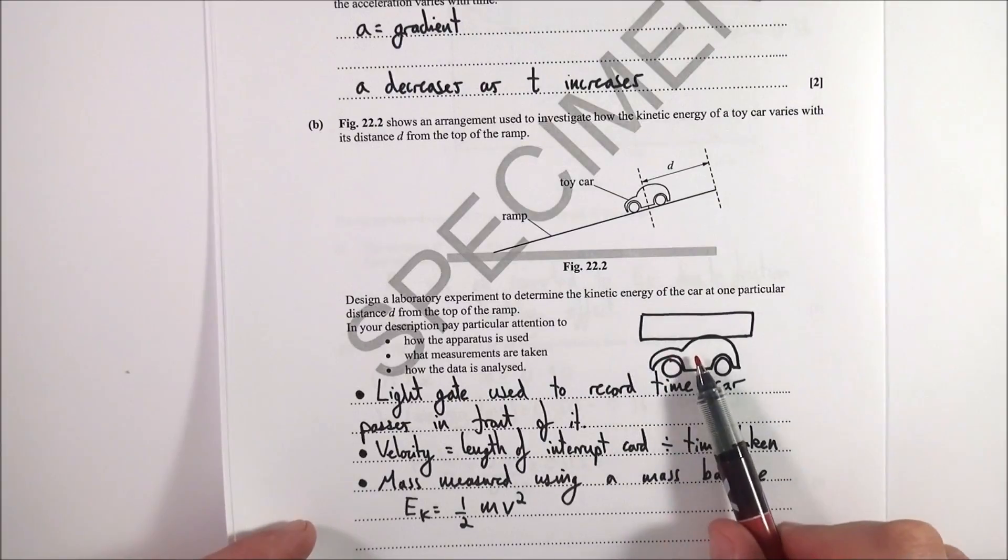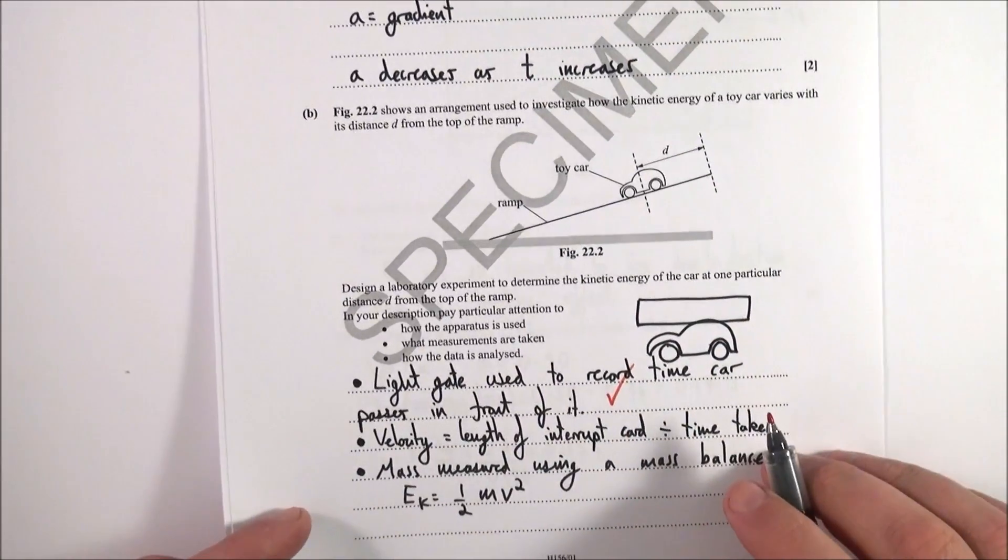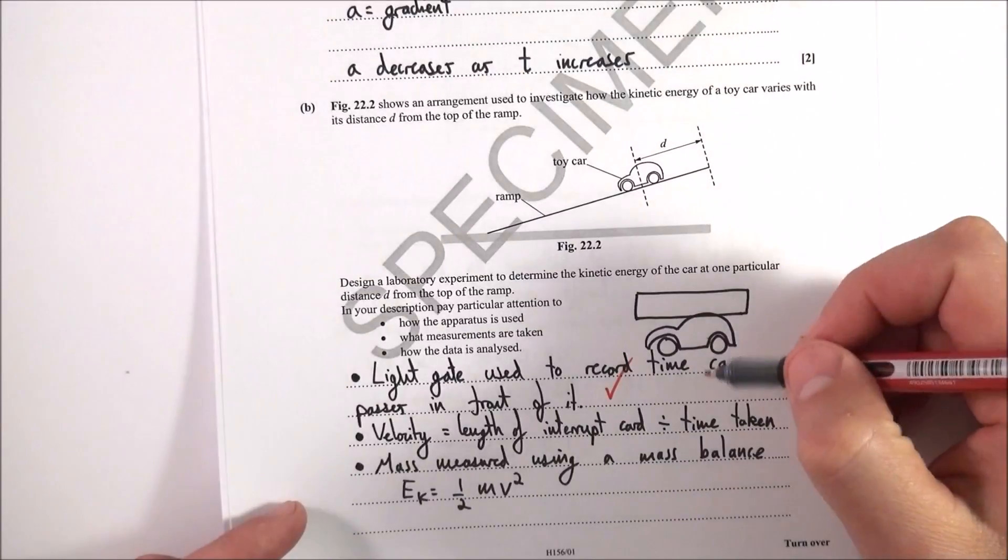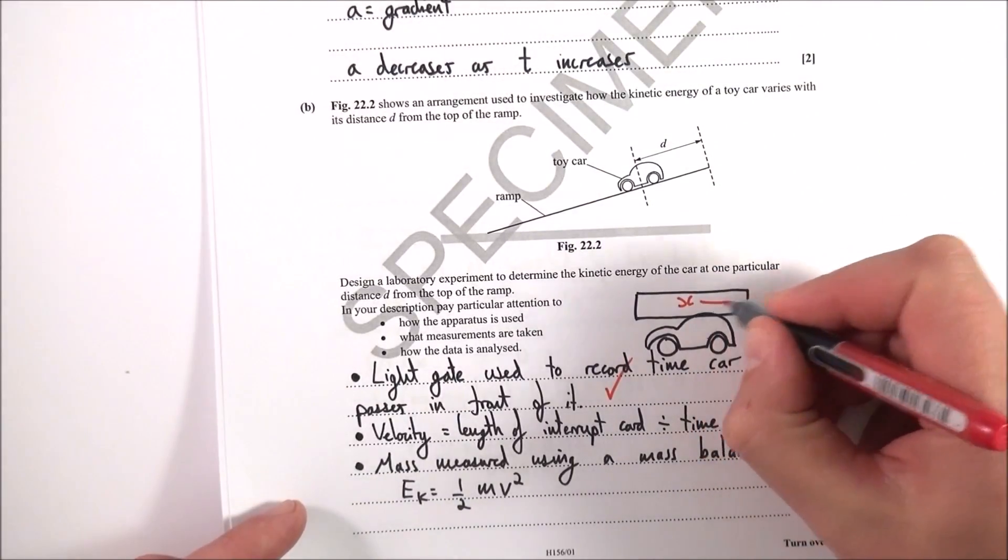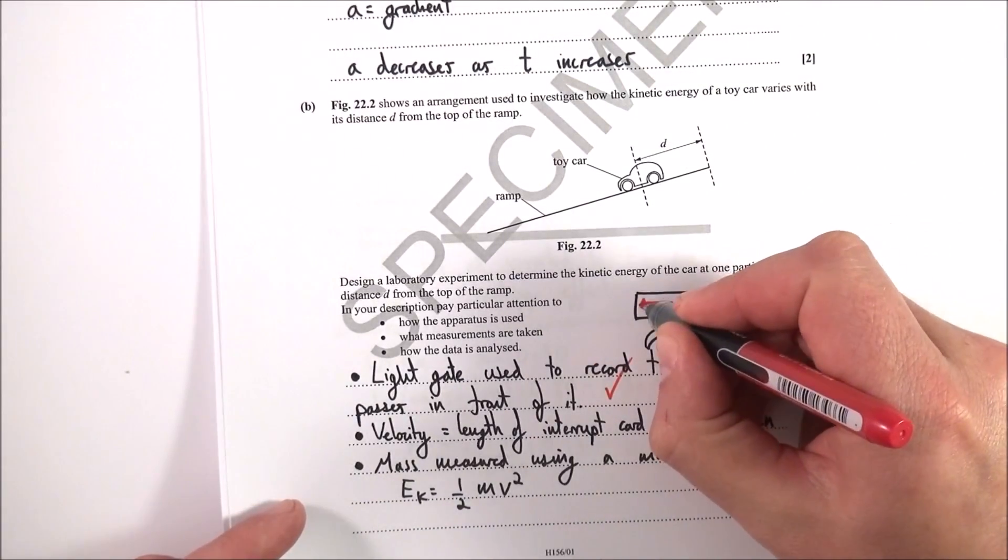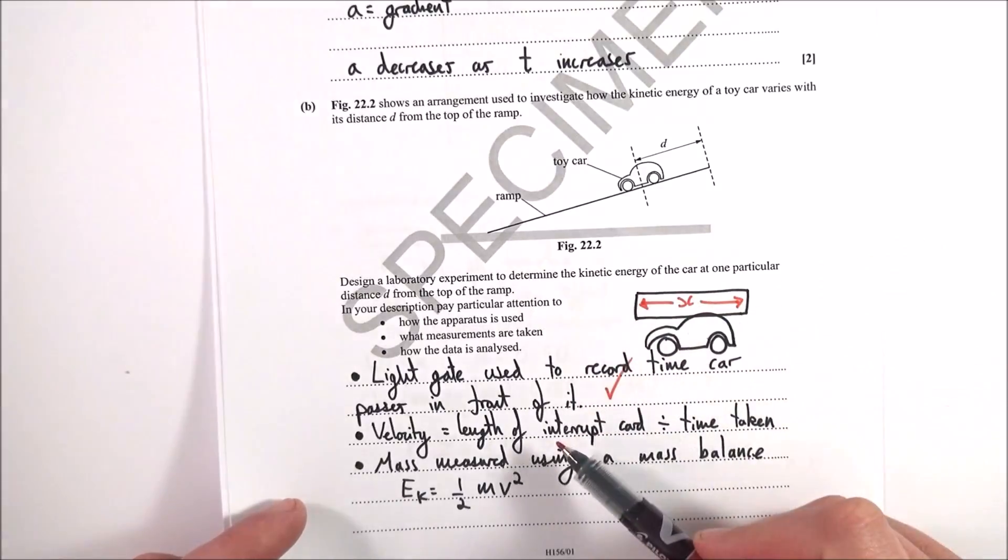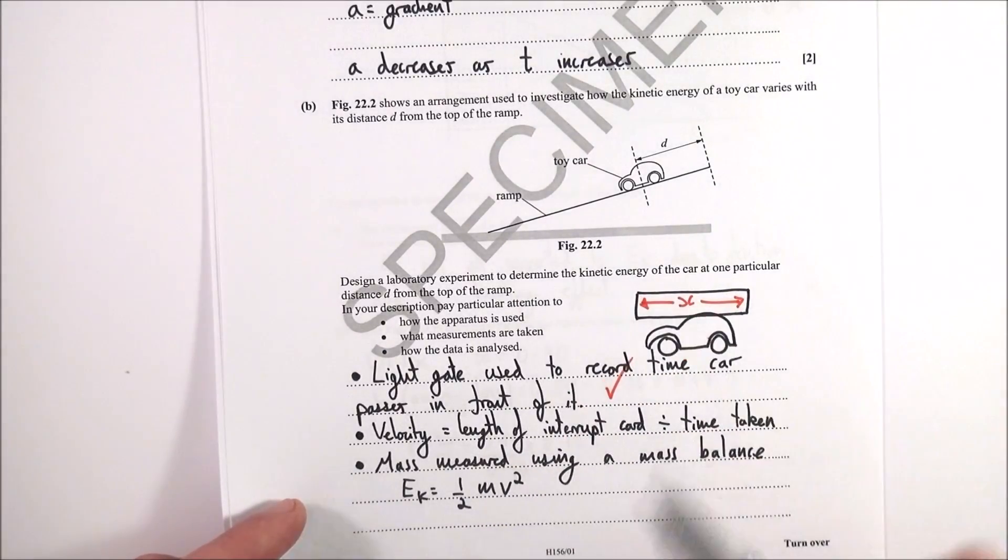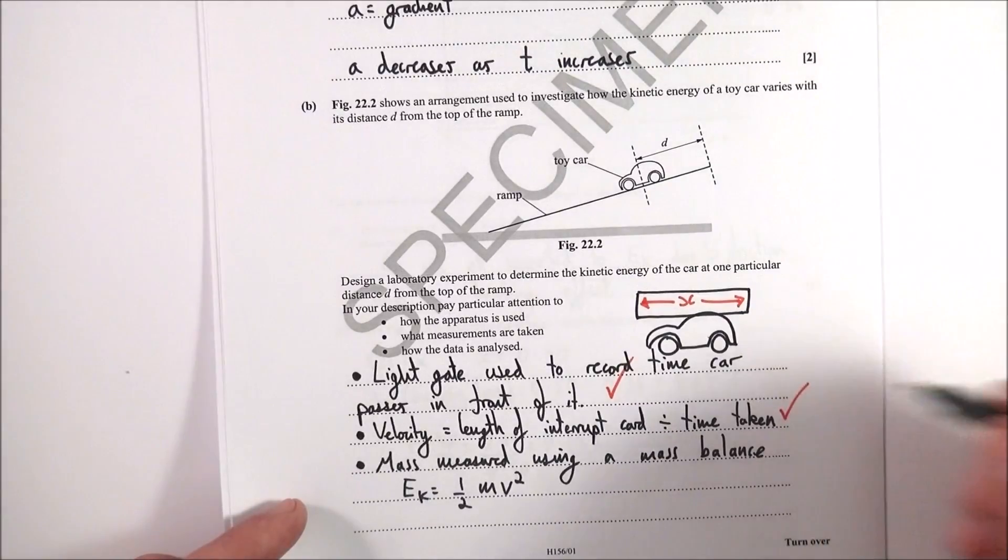I then said how, if you know the time and you know this distance here, x, of this piece of card here, then you know that the velocity is equal to the length of the card divided by the time that it cuts out the beam for. And that lets you work out the velocity.